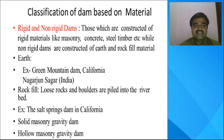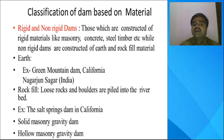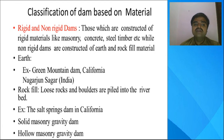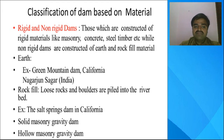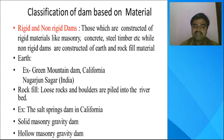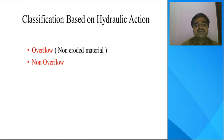The next classification is based on material — rigid and non-rigid dams. Dams constructed using rigid materials like masonry, concrete, steel, or timber are called rigid dams. Dams constructed with earth and rock fill material are called non-rigid dams. Examples include Green Mountain Dam in California and Nagarjuna Sagar Dam in India.